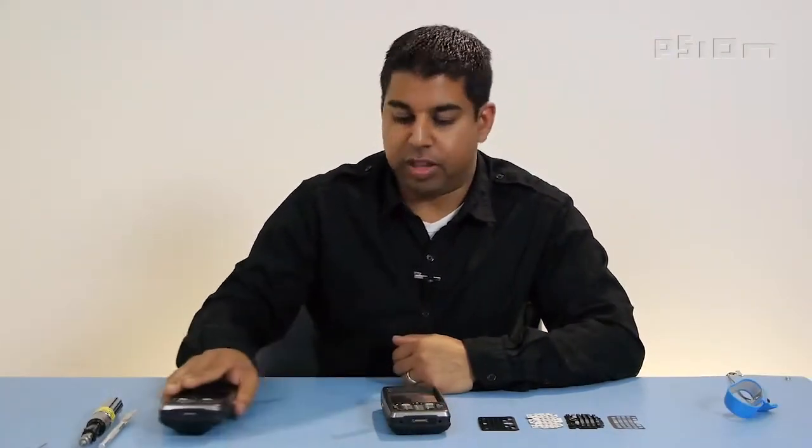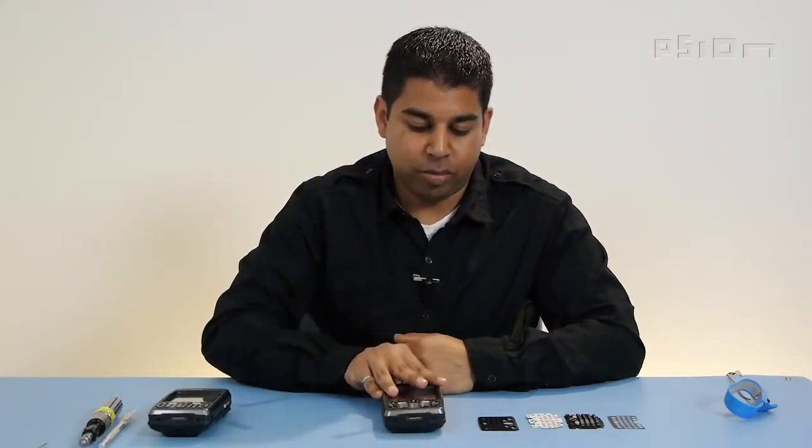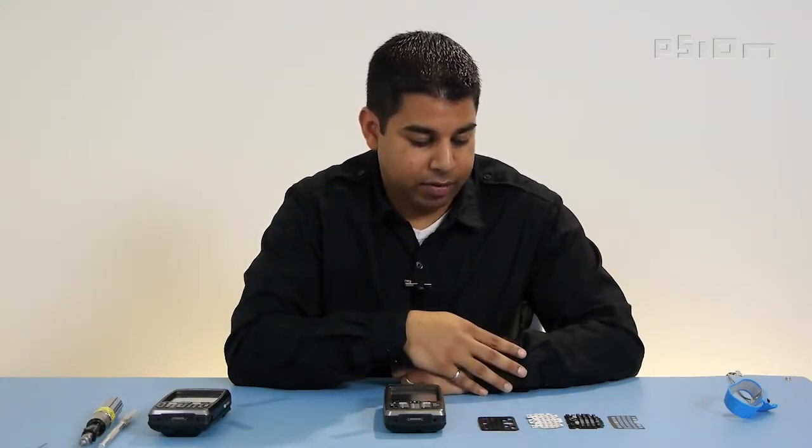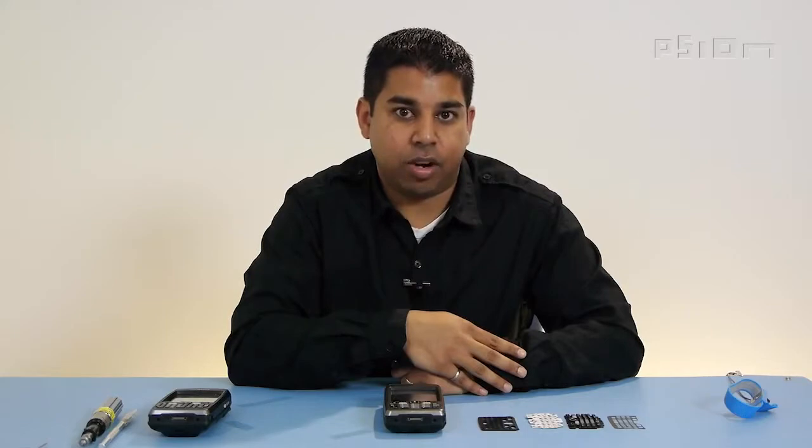For this exercise, we're going to use the numeric variant. And what we're going to do is change the numeric variant with a QWERTY keypad. And to do that, we have to have a service assembly kit, and these are the items.